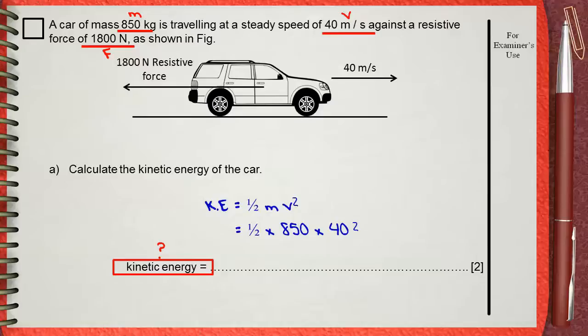Kinetic energy equals half times 850 times 40 power 2. So, the kinetic energy will be 680,000 joules.